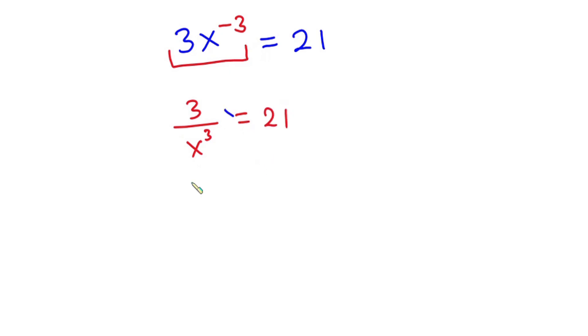Now from here, we can just cross multiply. So we have 21 times x to the third power is equal to 3.